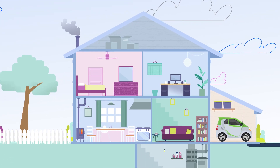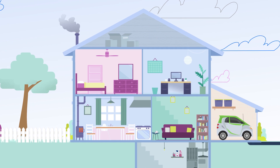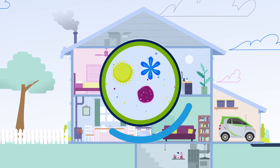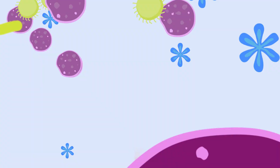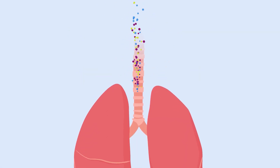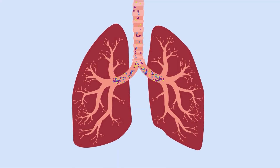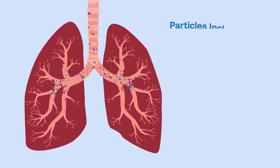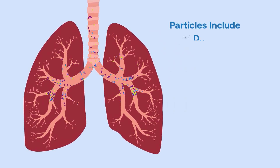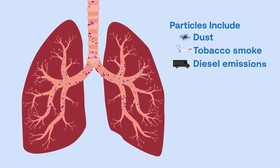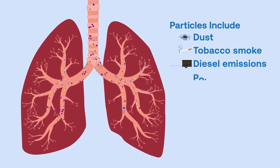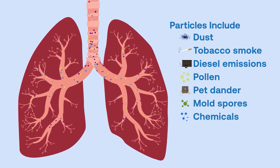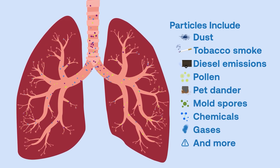Not all the air you breathe in is clean. Indoor air contaminants can include small particles that are suspended in the air. When those particles travel deep into your body, they can have a negative impact on your health. These particles can include things like dust, tobacco smoke, diesel emissions, pollen, pet dander, mold spores, chemicals, gases, and more.